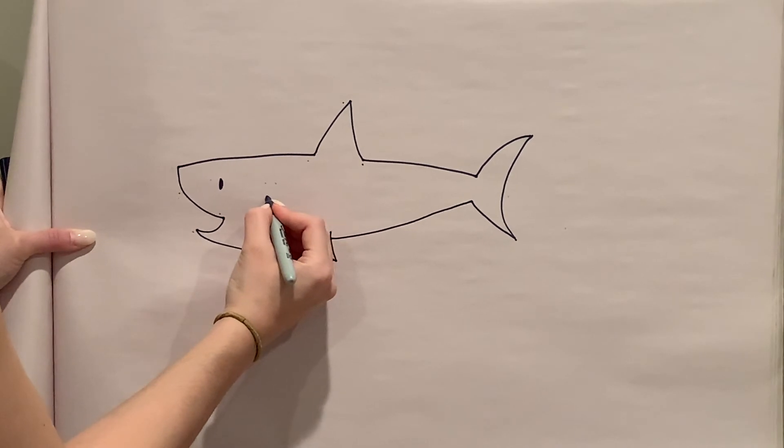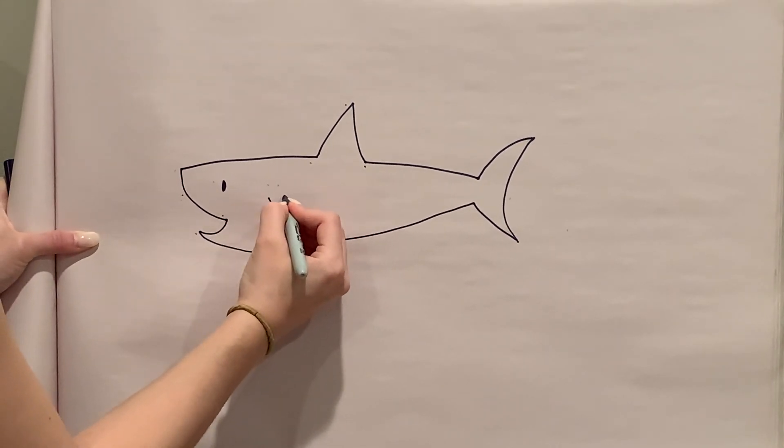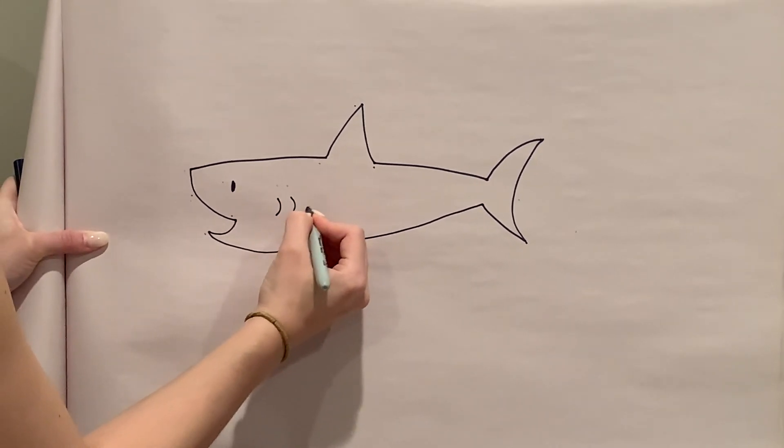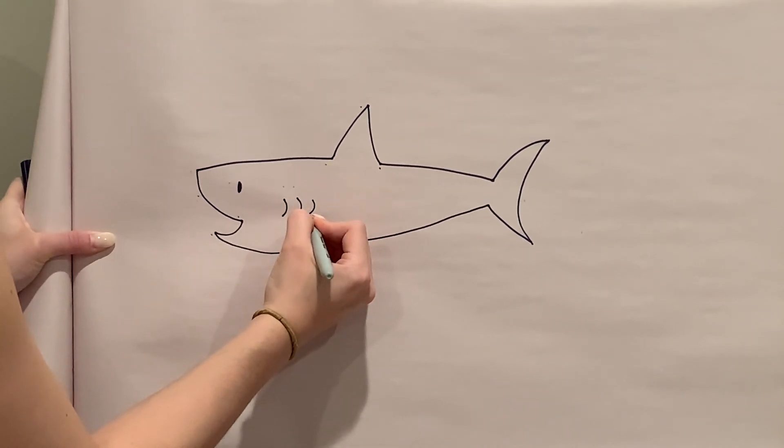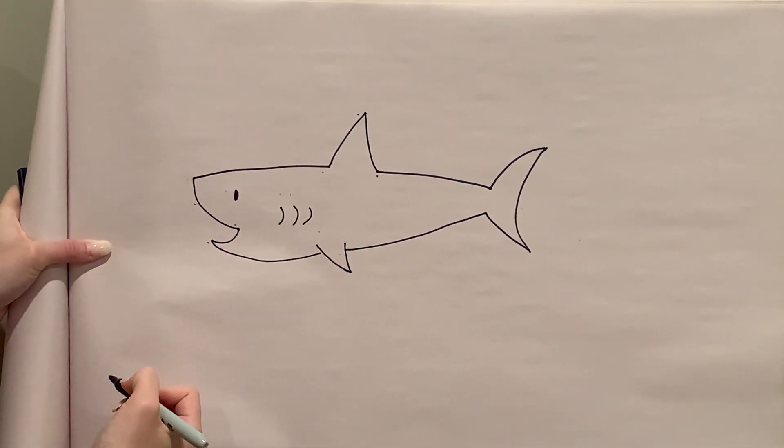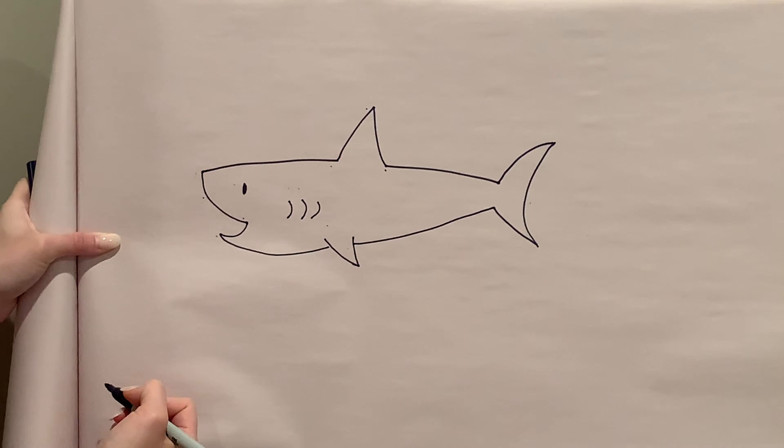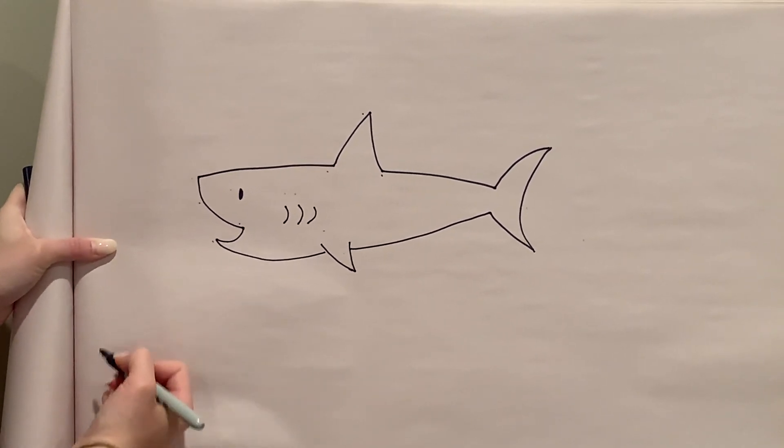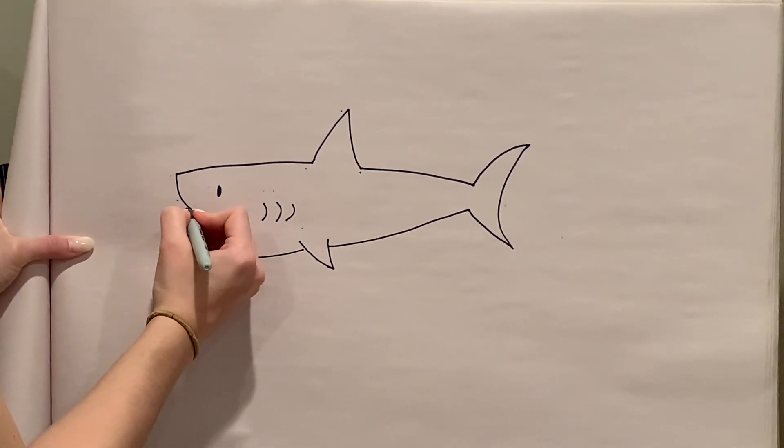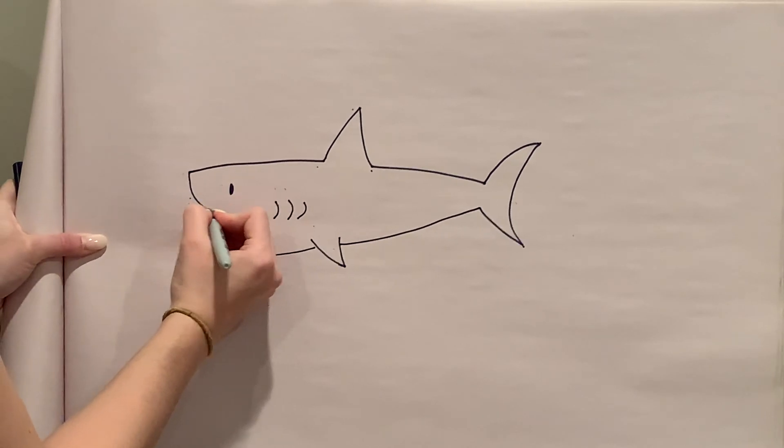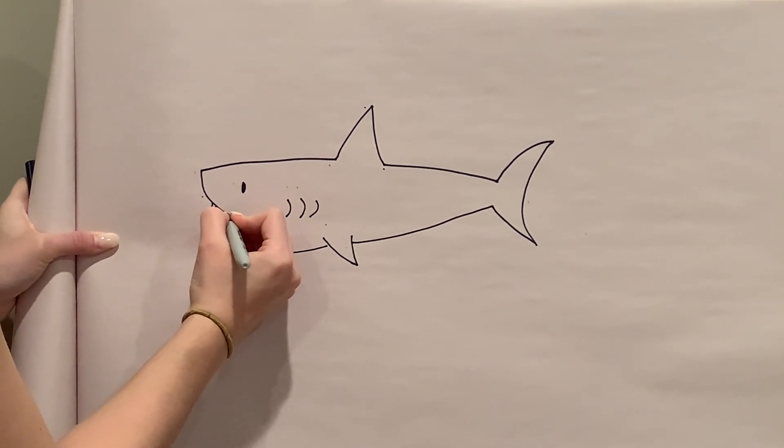Step thirteen, draw three little macaroni shapes or backwards C's for the gills. Step fourteen, draw small triangles for the shark's teeth.